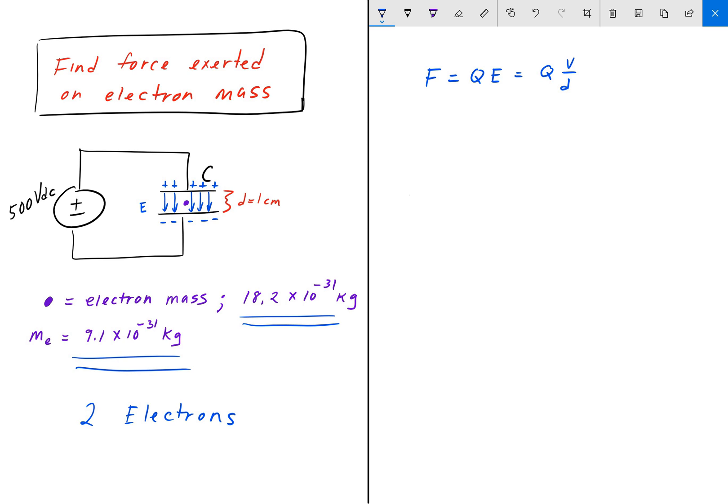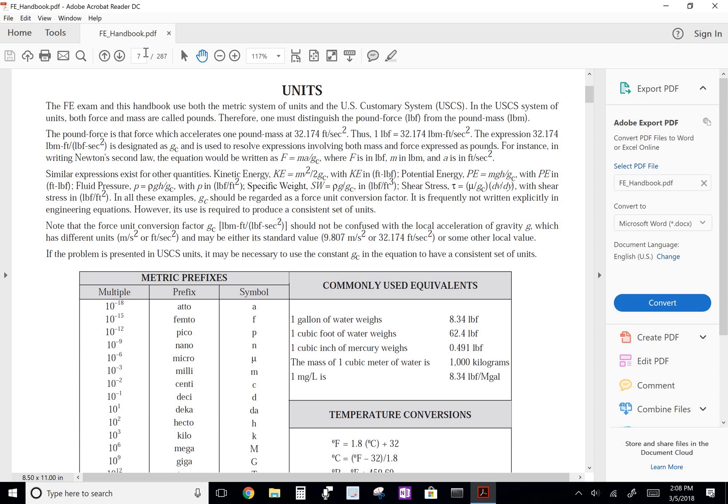We have two electrons in between the parallel plate capacitor, and we need to find the elementary charge of an electron. To find that Q, we go back to the FE handbook. All that information is there. There's no need to remember any formulas, any constants. Any constants that are not in the FE handbook will be given to you.